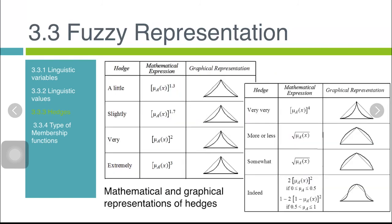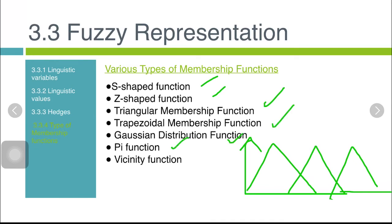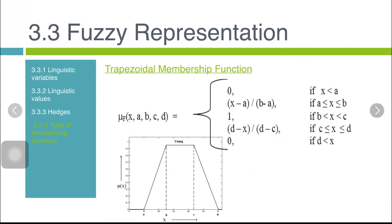These are the mathematical and graphical representations of hedges. We have here: a little, slightly, very, extremely, very very, more or less, somewhat, and indeed, with its own mathematical expression. Next, we have various types of membership functions. Previously what we have seen is the triangular membership function, but there also exist different types: S-shaped, Z-shaped, triangular membership function, trapezoidal, Gaussian distribution, Pi function, and vicinity function. I hope you can read this on your own.